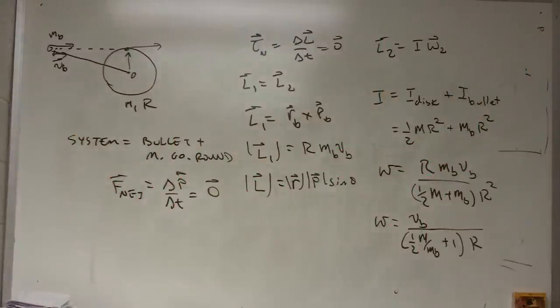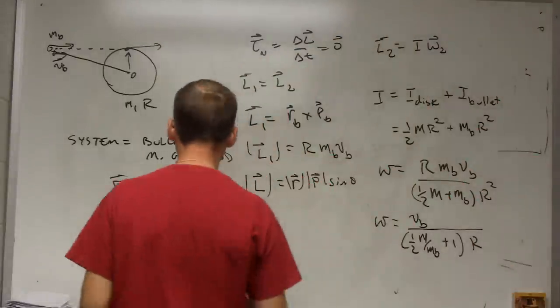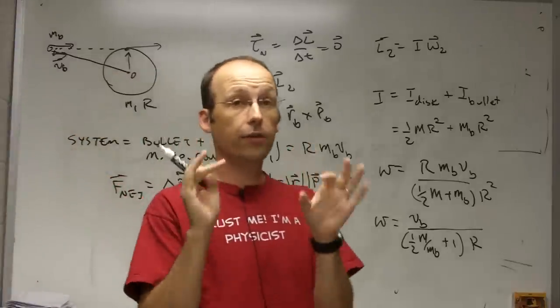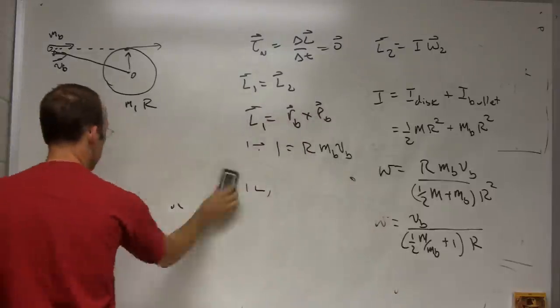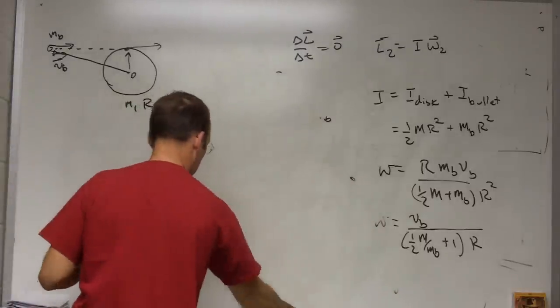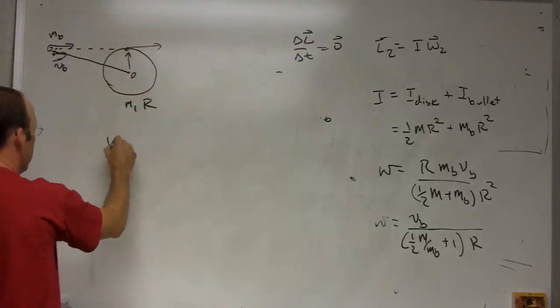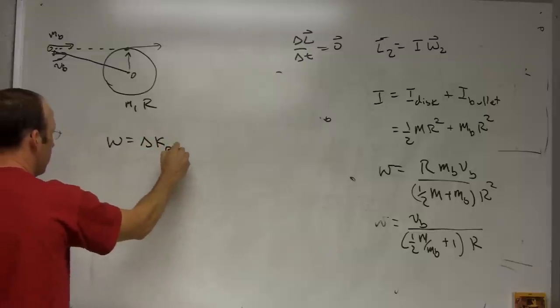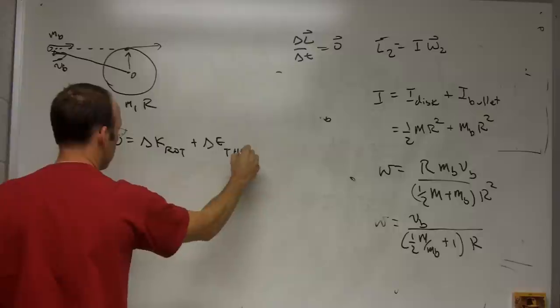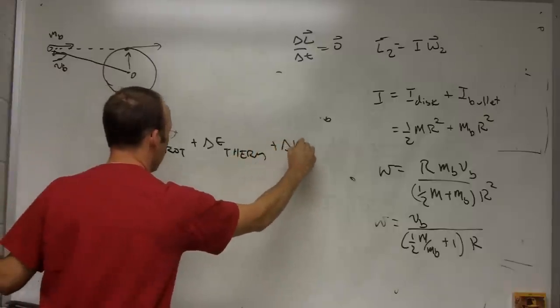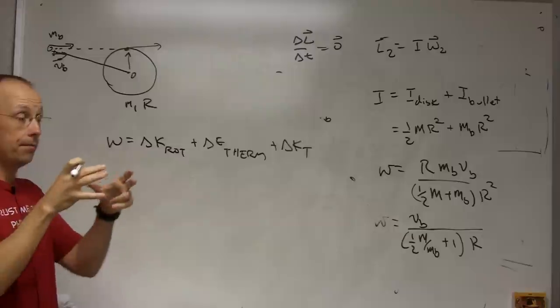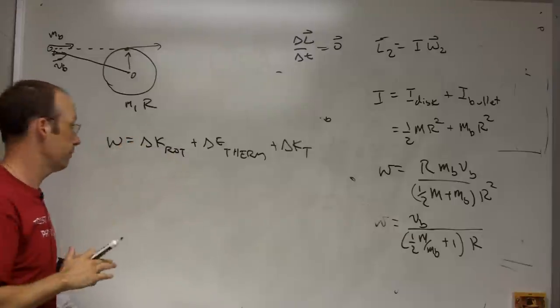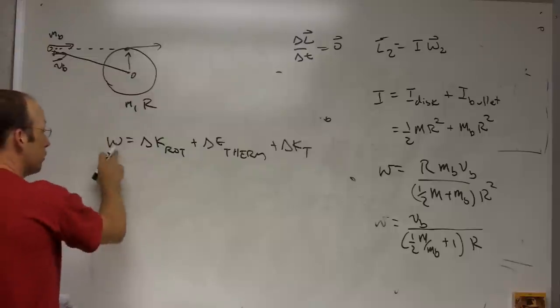One last thing. How much time have I used? Seven minutes. Okay. One last thing. What if I wanted to find the loss in thermal, the increase in thermal energy of the bullet plus merry-go-round? If I take the system to be the bullet plus merry-go-round, then work equals delta K rotational plus delta E thermal plus delta E K, delta K translational. Okay. So I have three real forms of energy that I can look at: rotational energy, translational energy, and thermal energy. If that's my system, there's no work done because there's no really external forces. So this is equal to zero.